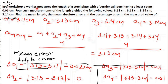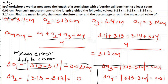In a workshop, a worker measures the length of a steel plate with vernier calipers having least count 0.01 cm. For 4 such measurements, the following values are: 3.11, 3.13, 3.14, and 3.14. We have to calculate mean length, mean absolute error, and percentage error. First, mean length: we add all values and divide by 4, and we get 3.13 cm.